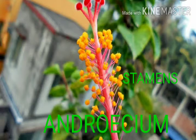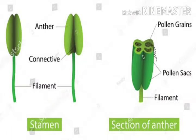Androecium is the male reproductive whorl and it is composed of stamens. Stamen is the male reproductive organ. Each stamen has three main parts: filament, connective, and anther. The long stalk is called the filament, and the two lobe-like structures are called anther lobes. The connective tissue is a sterile tissue which connects the two anther lobes.